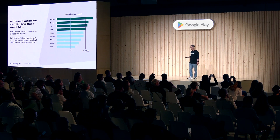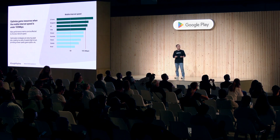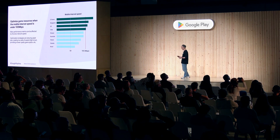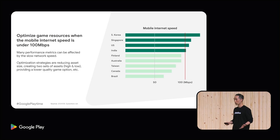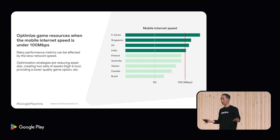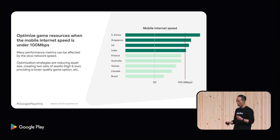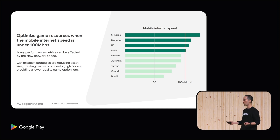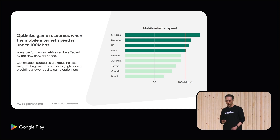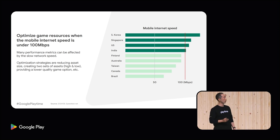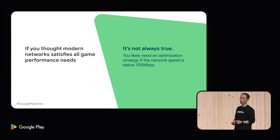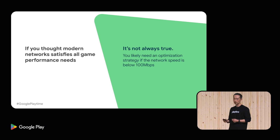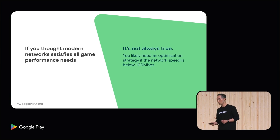Here's a simple and easy-to-execute strategy: optimize your game whenever the mobile internet speed is under 100 Mbps. You can easily Google this kind of data too. If you look at Korea and Singapore at the top, you probably don't need to optimize much. But when you want to launch your game in Brazil, you need to think about how to optimize — for example, by reducing asset size, creating two sets of assets, or providing a lower quality game option in game settings. By doing so, you can improve the overall game experience for mid and low tier device users. Modern networks don't always satisfy all game performance needs, so an optimization strategy is needed when network speed is under 100 Mbps.